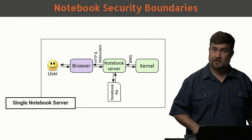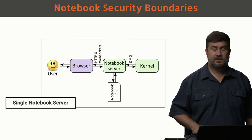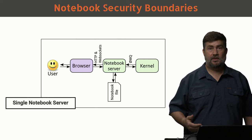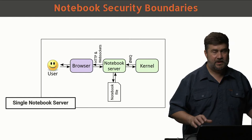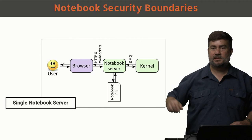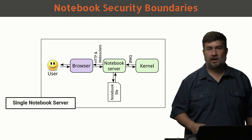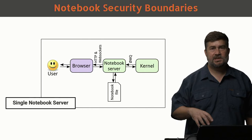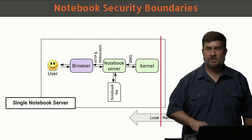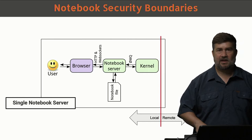Another important thing to discuss are boundaries. This is about boundaries between the system that the software is running on and the rest of the world. If we assume that this outer box is the system you're running Jupyter on — a laptop or desktop — these are the things going on inside: you've got the browser connecting to the Notebook server, which is reading files and running the kernel. What if some of these things were running somewhere else?